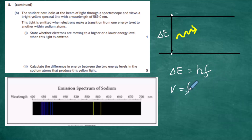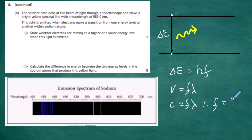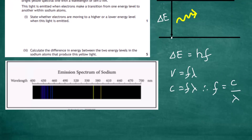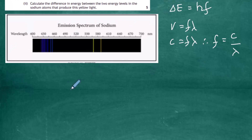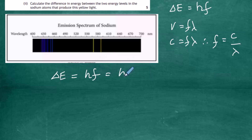We know that v = fλ, and since v is the speed of light, c = fλ. We rearrange to get f = c/λ. Substituting into the energy equation gives us the sister equation: ΔE = hf = hc/λ. So we have Planck's constant, the speed of light, and the wavelength, and we can go ahead and work out the actual value.